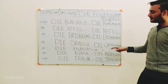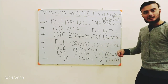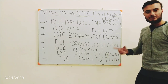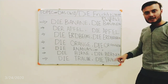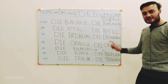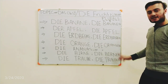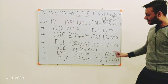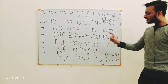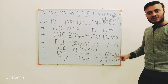Next one is 'die Birne' — the pear. Its plural will be 'die Birnen' — just an 'n' is added. So 'die Birne' is the pear and 'die Birnen' is the pears.